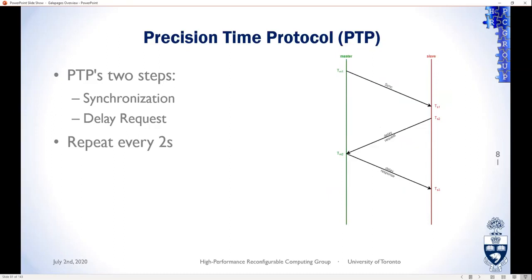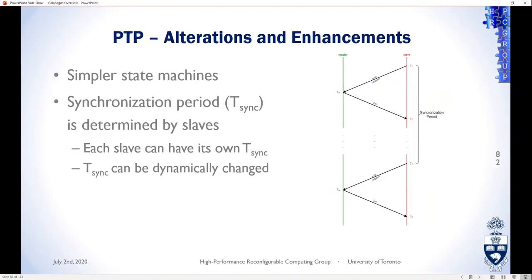PTP has two main steps: the master sends a synchronization message to the slave, the slave updates its time, then through back-and-forth communication the slave measures network delay and adds the offset. IEEE recommends repeating this every two seconds. In Pharos, several alterations are made taking advantage of FPGA programmability: the initial synchronization is eliminated, and synchronization and network offset correction are done in one step. Each slave can also have a different synchronization period based on how much its time drifts from the master.